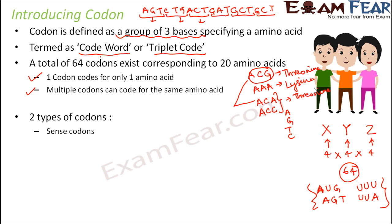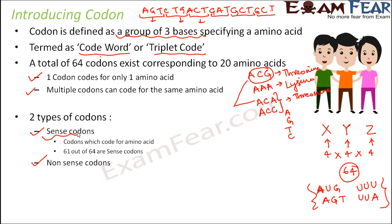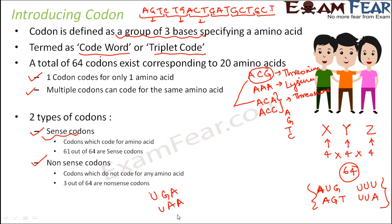There are two types of codons: sense codons and nonsense codons. Sense codons are those which code for amino acids. Out of the 64 codons, there are a few which do not code for any amino acid — those are called nonsense codons. In total, 61 are sense codons and only three are nonsense codons: UGA, UAA, and UAG. These are also referred to as stop codons, because whenever such a codon is encountered, the process of translation stops.